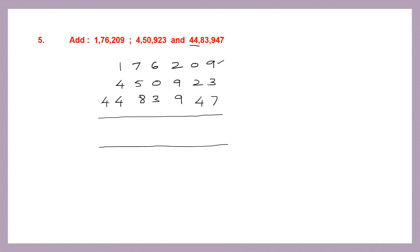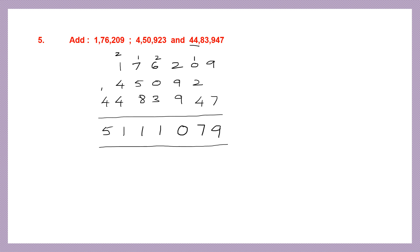Now let's add. 9 plus 3 is 12, plus 7 is 19, carry 1. 1 plus 2 is 3, 3 plus 4 is 7. Then 2 plus 9 is 11, 11 plus 9 is 20, carry 2. 6 plus 2 is 8, 8 plus 3 is 11, carry 1. 7 plus 1 is 8, 8 plus 5 is 13, 13 plus 8 is 21, carry 2. 2 plus 1 is 3, 3 plus 4 is 7, 7 plus 4 is 11, carry 1. 4 plus 1 is 5. Now let's place the commas in the right places and we can read the number: 51,11,079.